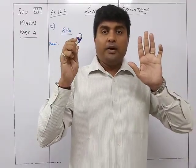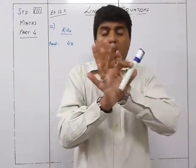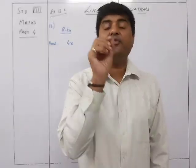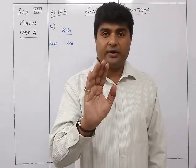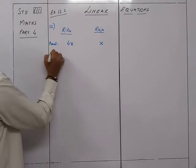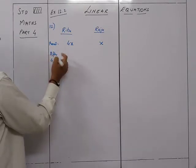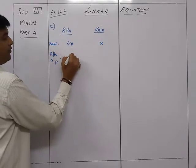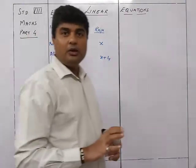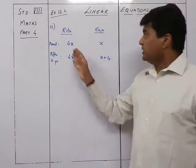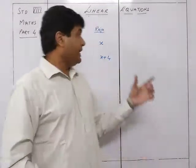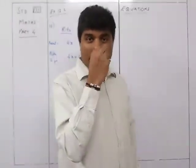After four years, Ritu's age becomes 4x plus 4 and Raju's age becomes x plus 4. We now apply the second condition given for after four years.